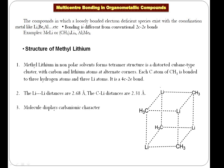Multi-center bonding exists in compounds that have organic fragments — fragments like CH3, commonly called methyl — which are loosely bonded electron-deficient species. Those organic fragments are electron deficient; carbon is not making the full four bonds. CH3 is electron deficient, and those electron-deficient species are in coordination with metals like lithium, beryllium, and aluminum.